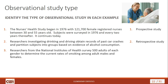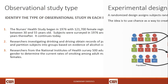Next example: researchers from the National Institutes of Health survey 500 adults of each gender to determine the current rates of smoking among adult males and females. This is a cross-sectional study. You're actually surveying adults in the present — looking to the present to collect your data. That makes this a cross-sectional study.